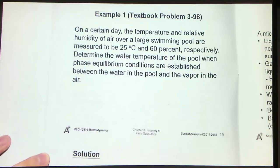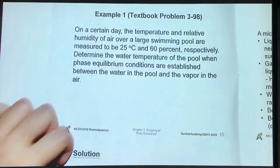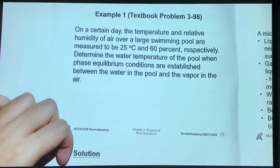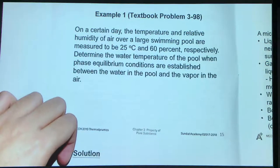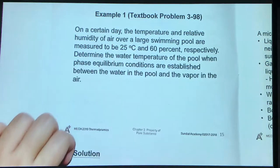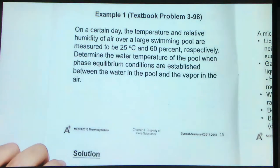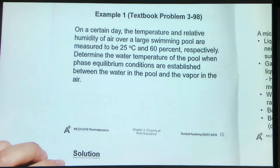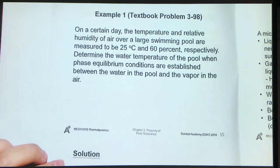It goes like this: on a certain day, the temperature and relative humidity of air over a large rain pool are measured to be 25 degrees C and 60% respectively. We need to determine the water temperature of the pool when phase equilibrium conditions are established between the water in the pool and the vapor in the air.